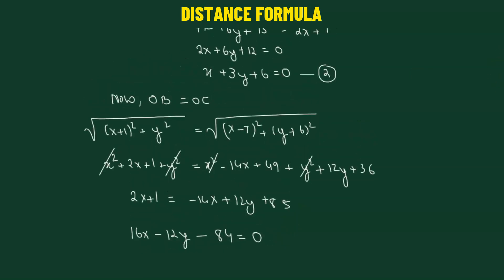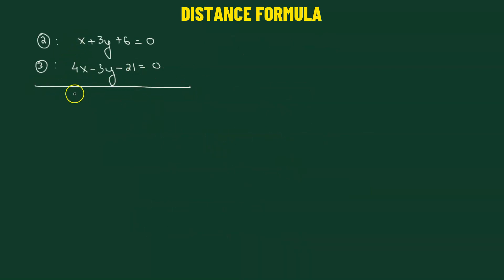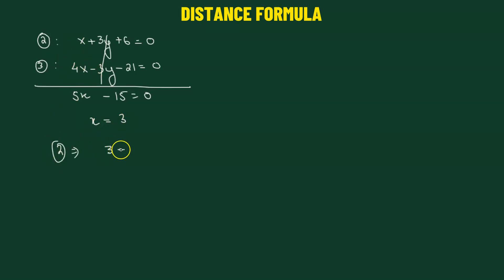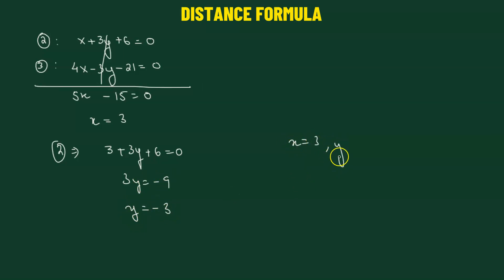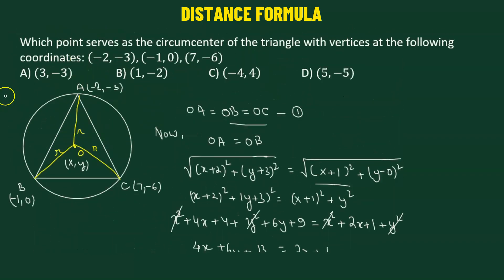Now we solve equation 2 and equation 3, two linear equations in X and Y. Adding the two equations: 4X plus X gives 5X, the 3Y and negative 3Y cancel out, and 6 minus 21 gives negative 15 equals 0, so X equals 3. Substituting X equals 3 back into equation 2: 3 plus 3Y plus 6 equals 0, so 3Y equals negative 9, giving Y equals negative 3. Therefore X equals 3 and Y equals negative 3, and the circumcenter of the triangle is the point 3 comma negative 3, which corresponds to option A.